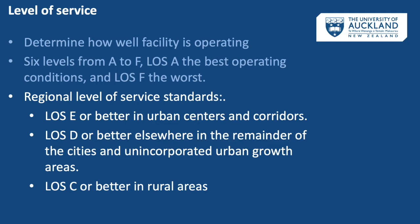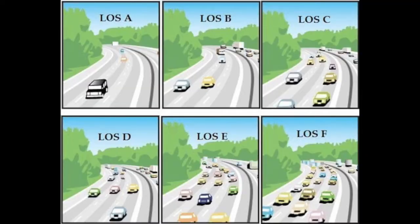In a two-hour p.m. peak: LOS E or better for urban centers and corridors; LOS D or better elsewhere in the remainder of cities and unincorporated urban growth areas; and LOS C or better in rural areas, that is outside of urban growth areas.